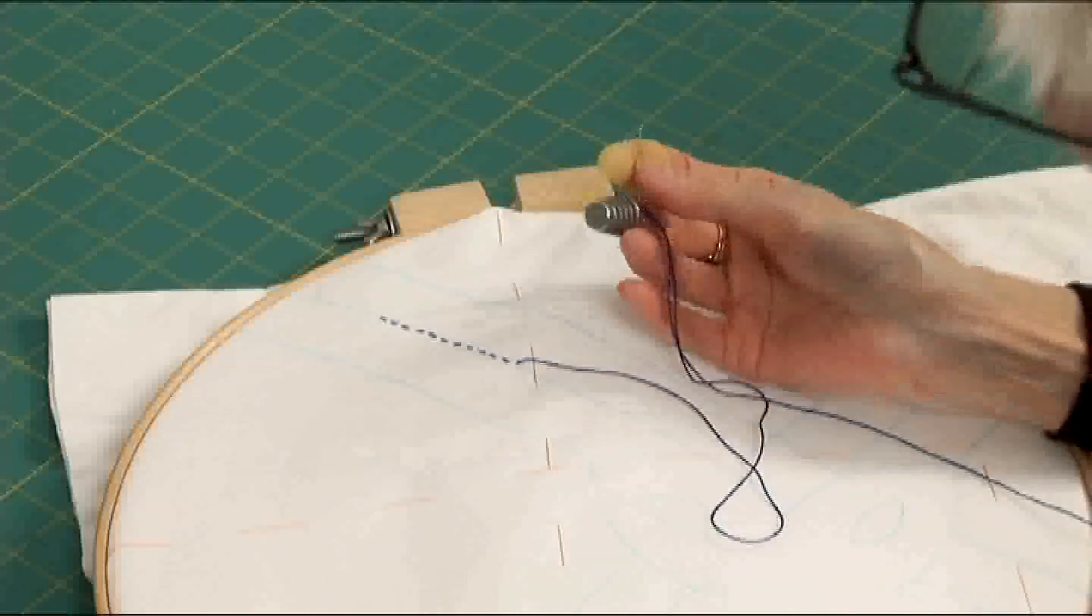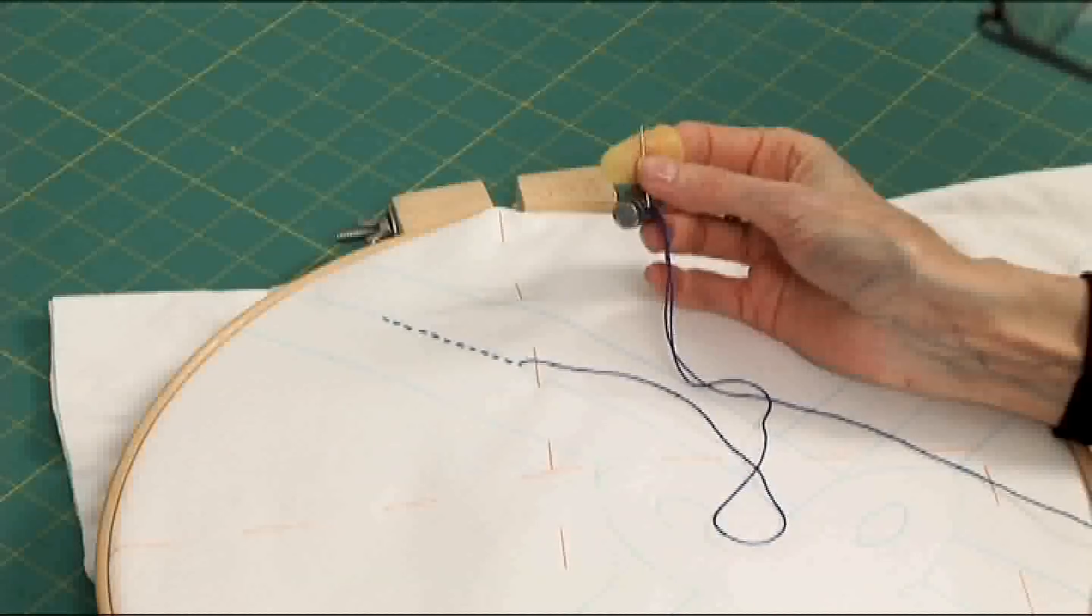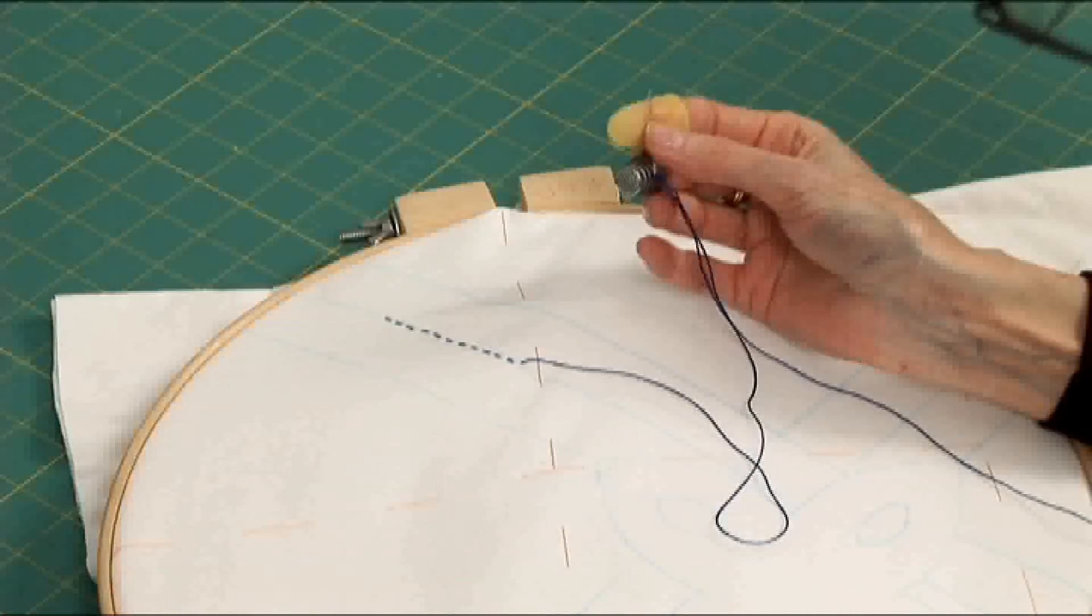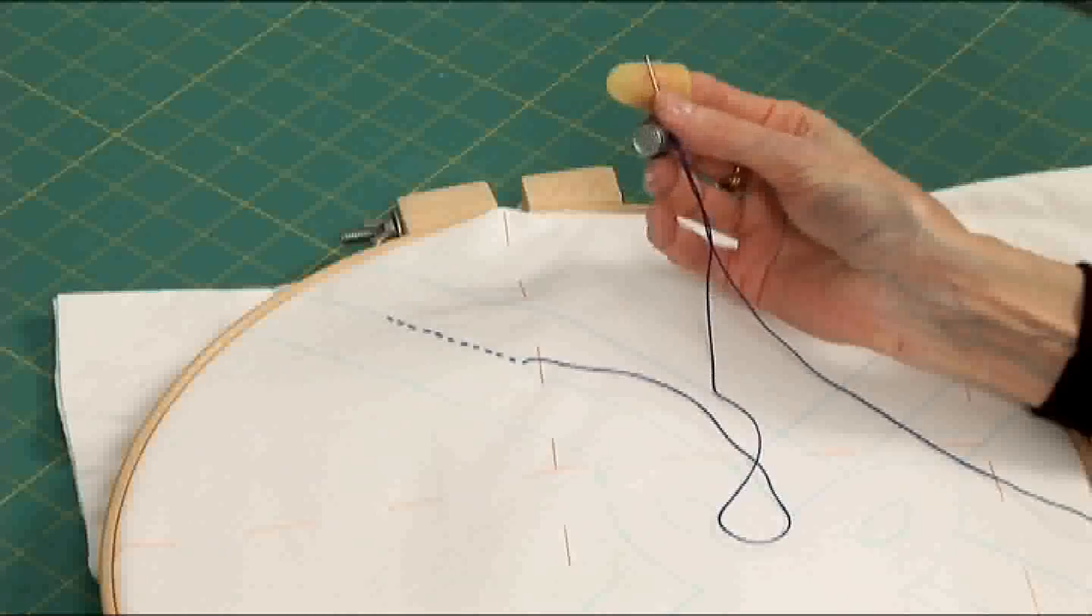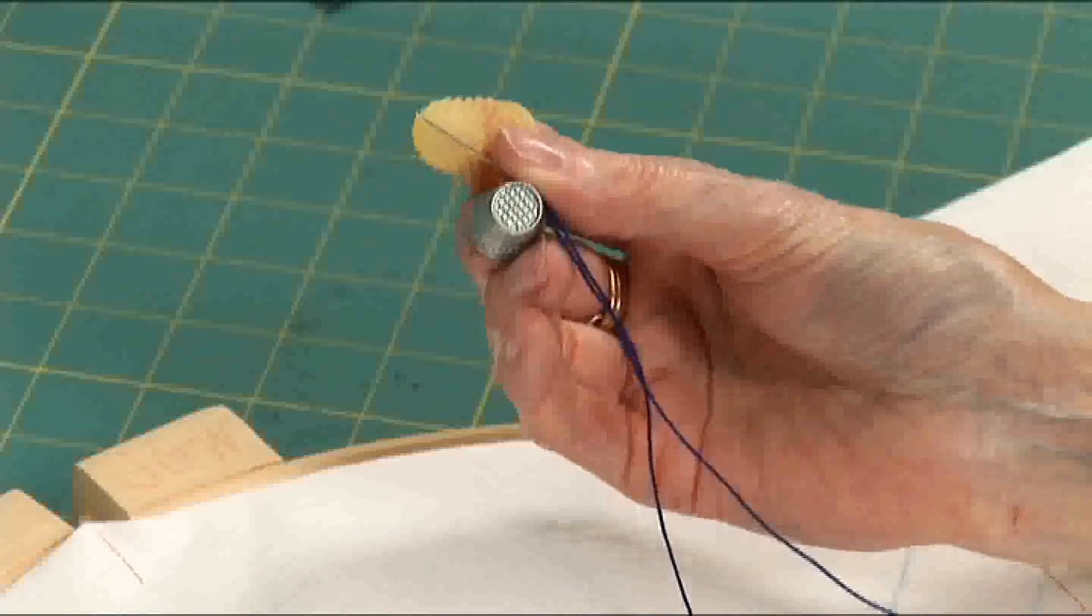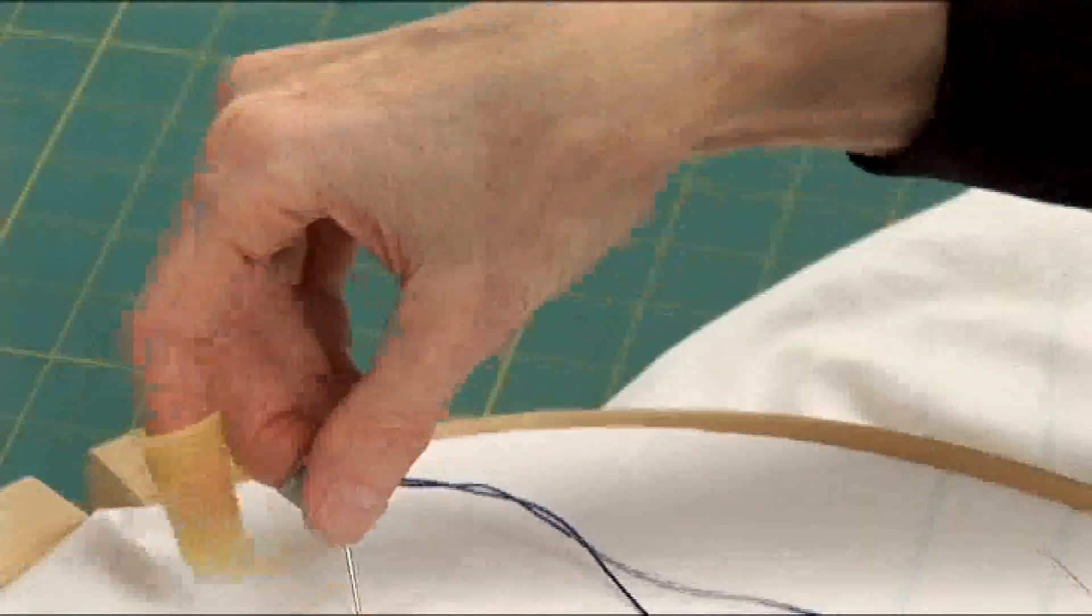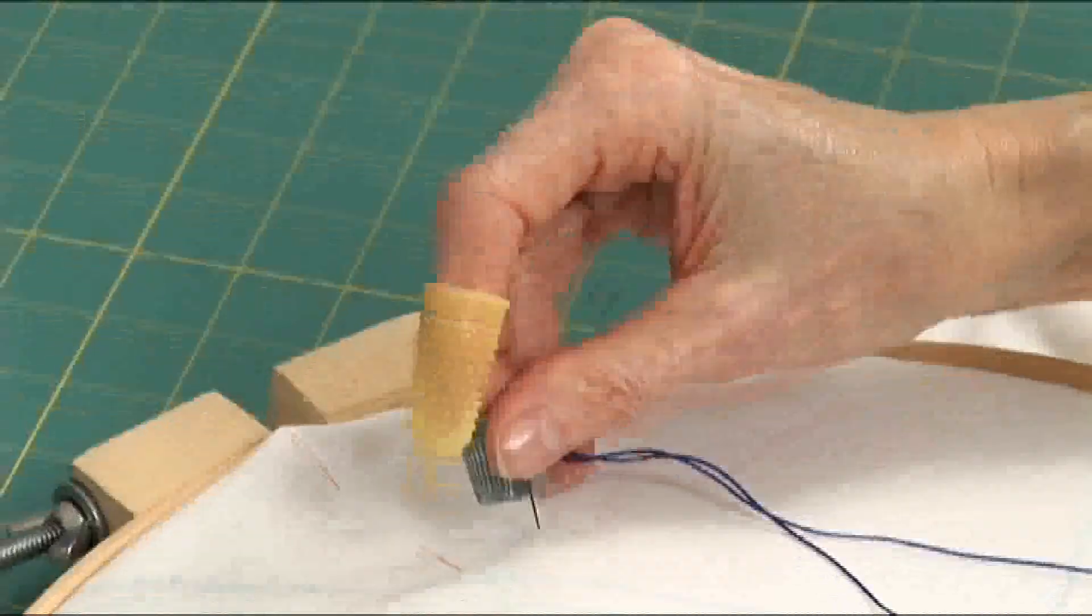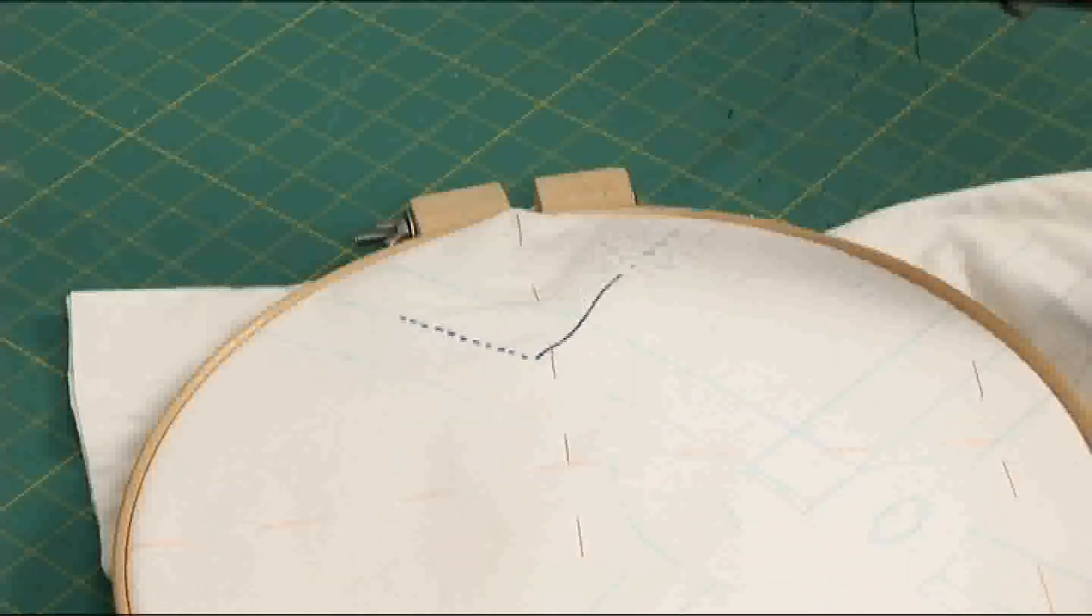And notice that when you finish taking the stitches, you're in this position. To get back into the perpendicular down position, I just twirl the needle on my quilt top like that.